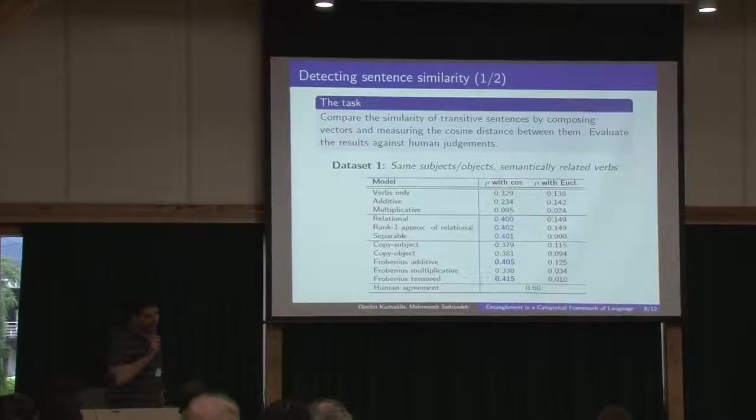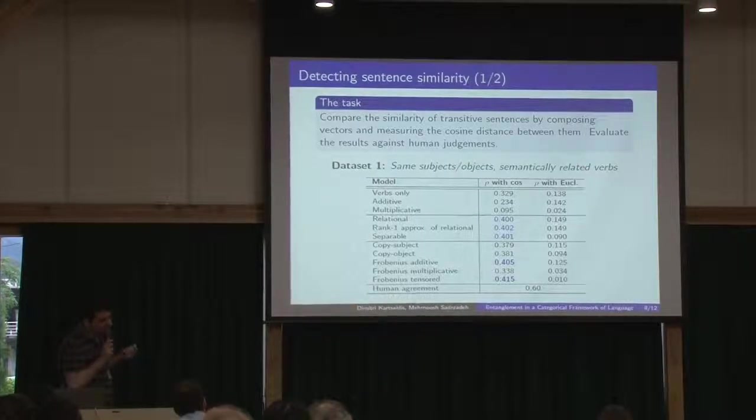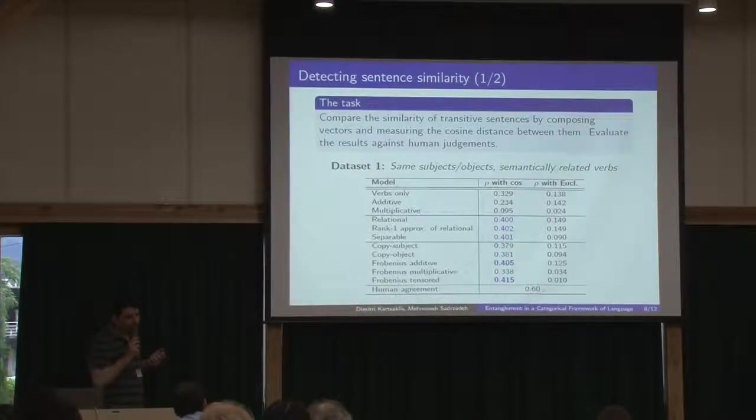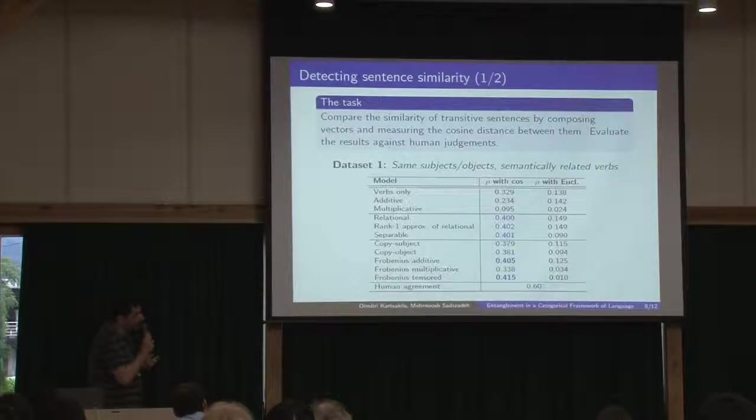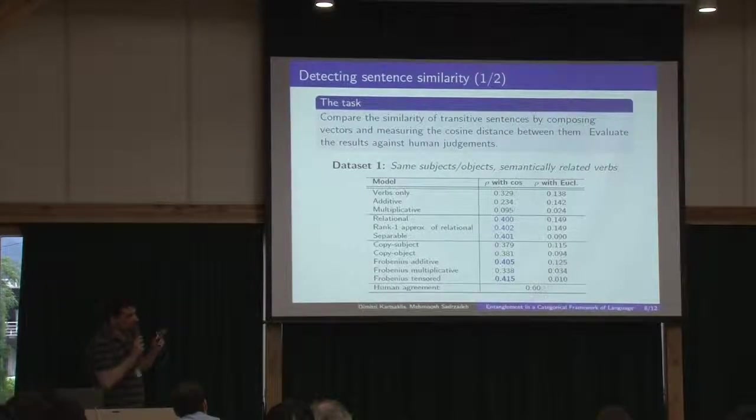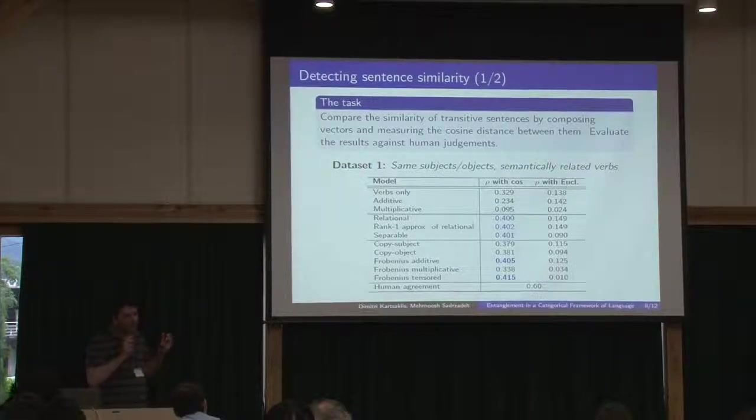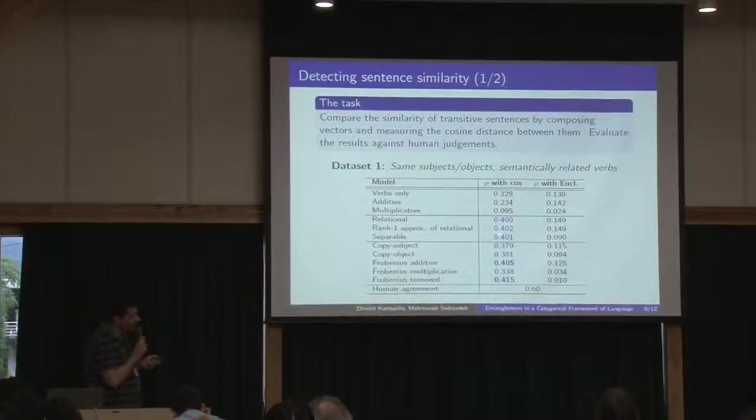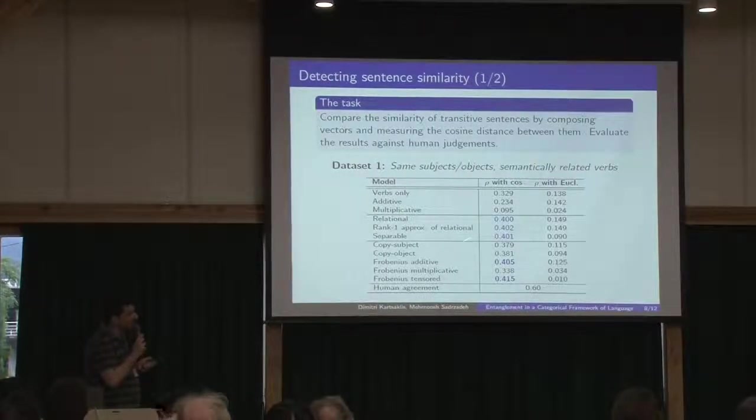And here are our experiments. We tested all these models in a sentence similarity task. We have pairs of sentences. We calculate the composed vector for the sentence, and then we test the cosine distance between them. And in order to evaluate this, we compute the correlations with human judgments. And you see here that, for example, the relational model where we copy both dimensions and the rank 1 approximation and the separable model are almost the same.